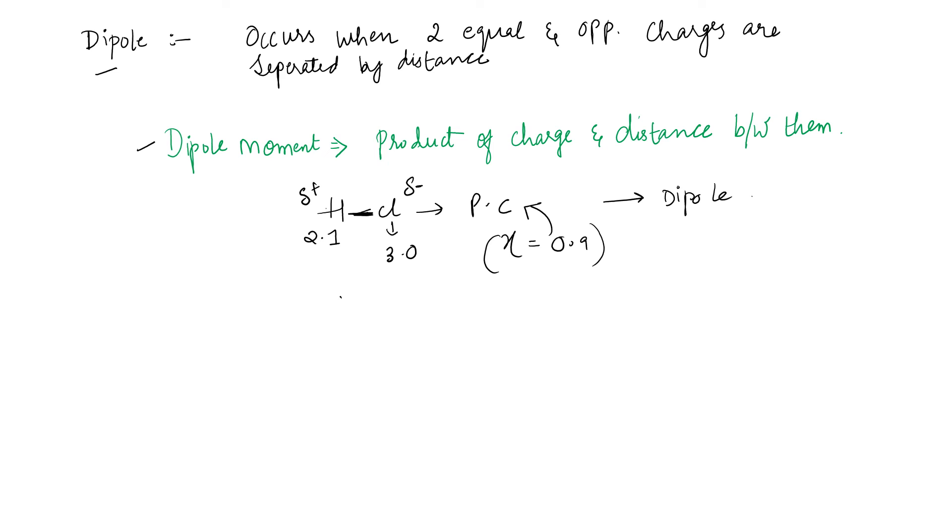When there are two equal and opposite charges which are separated by a distance, then this is called as a dipole. And when you want to have a look on what a dipole moment is, it is represented by μ, which is a product of charge and distance. So multiplication of charge and distance gives us the dipole moment.